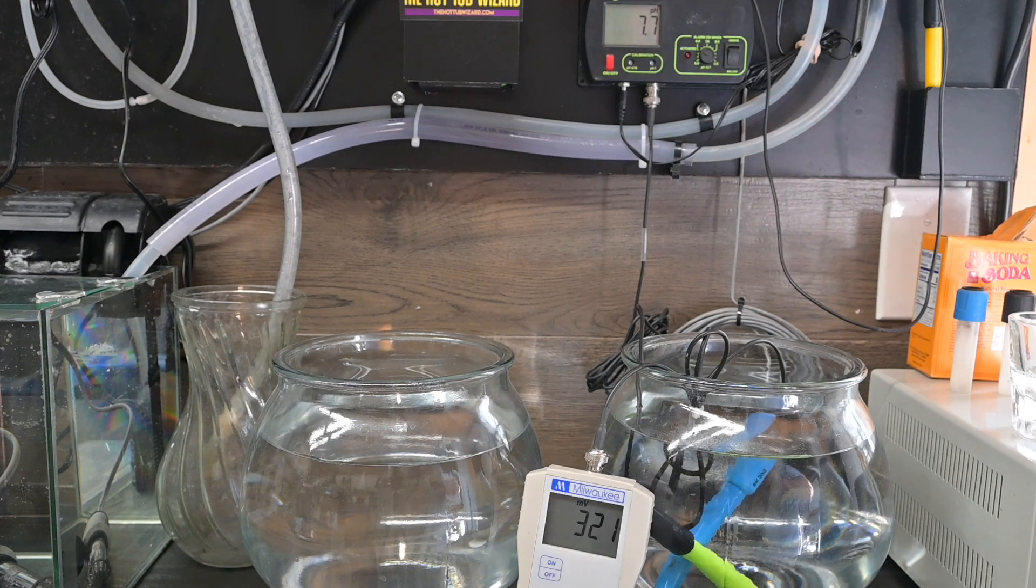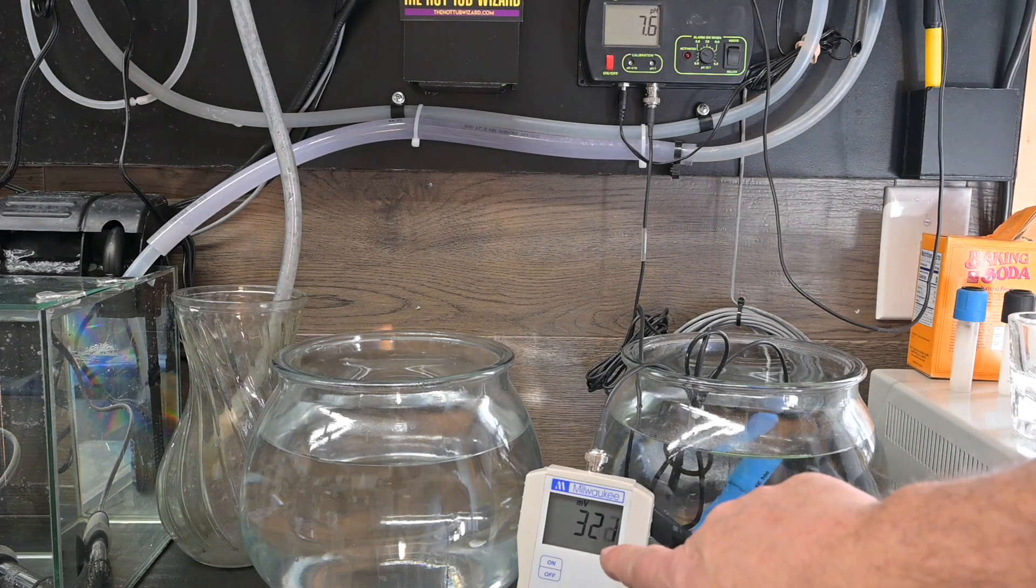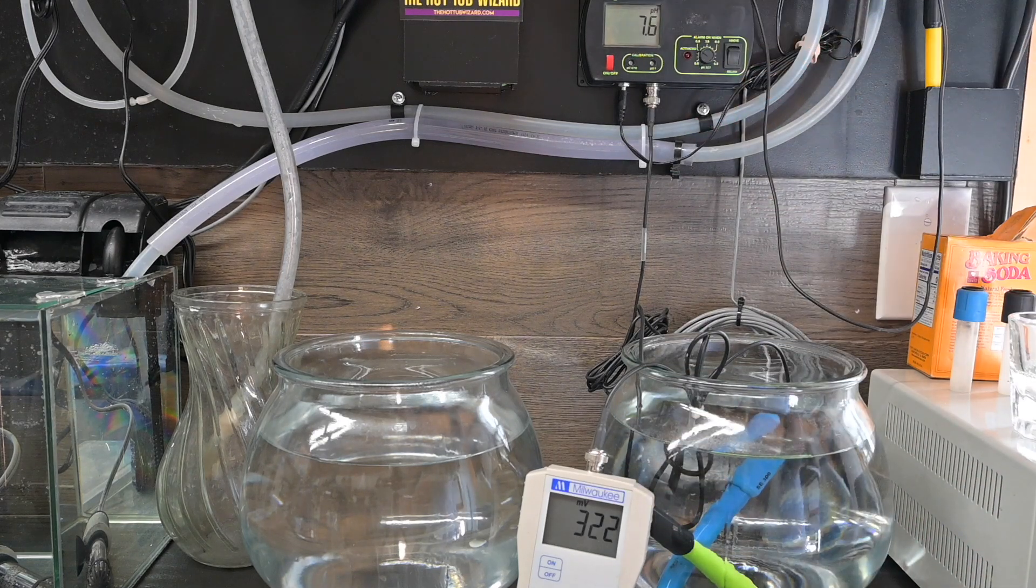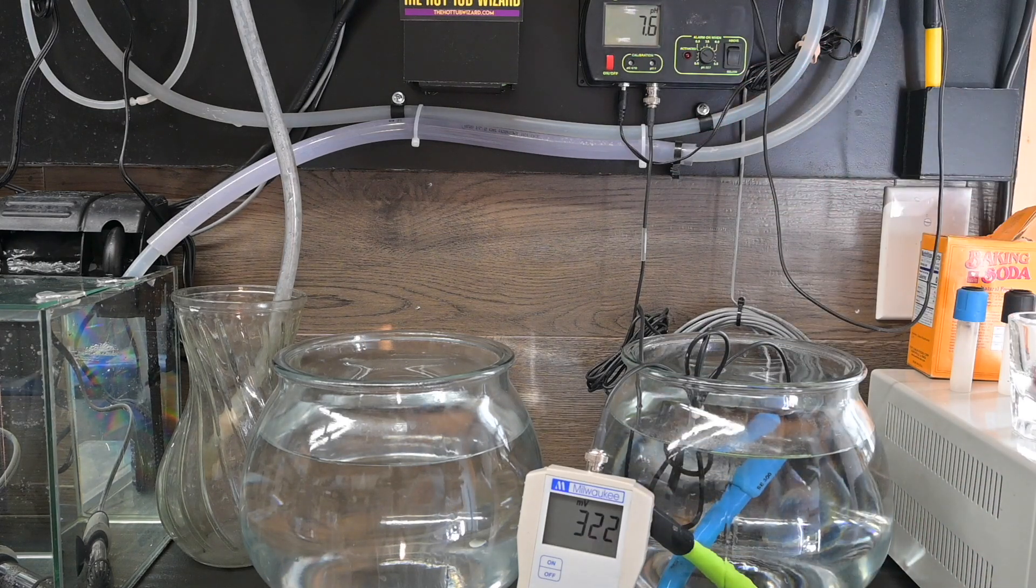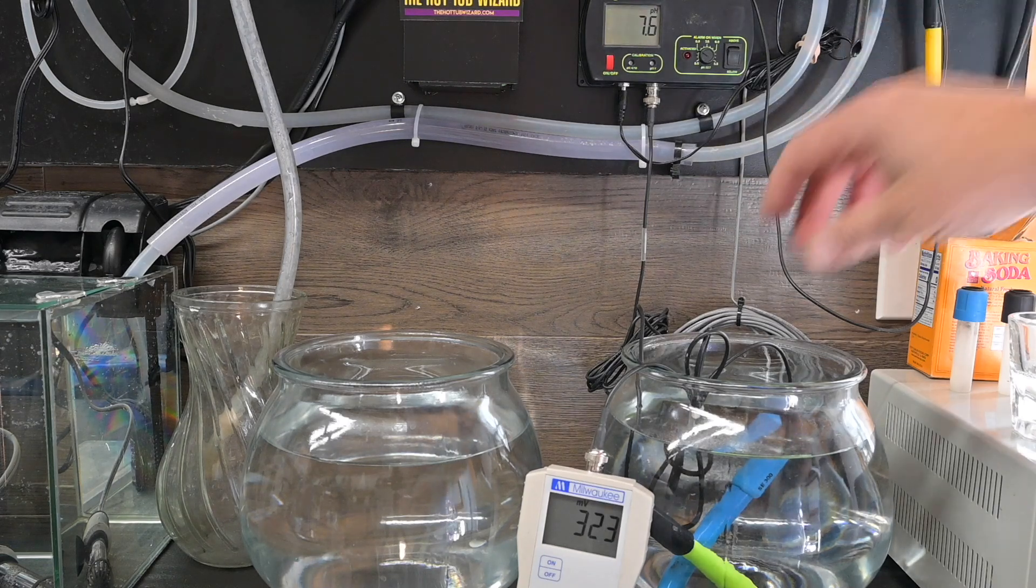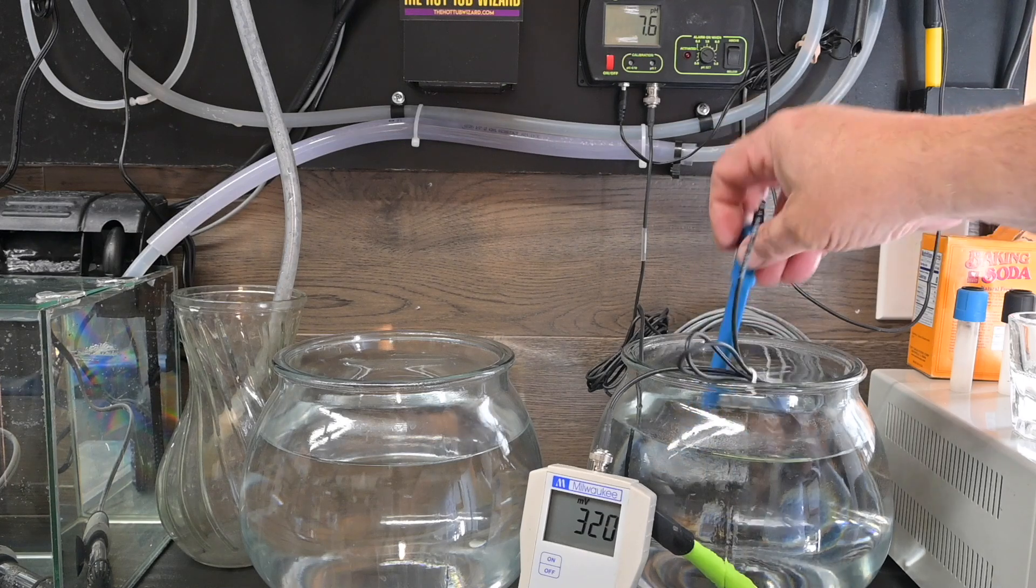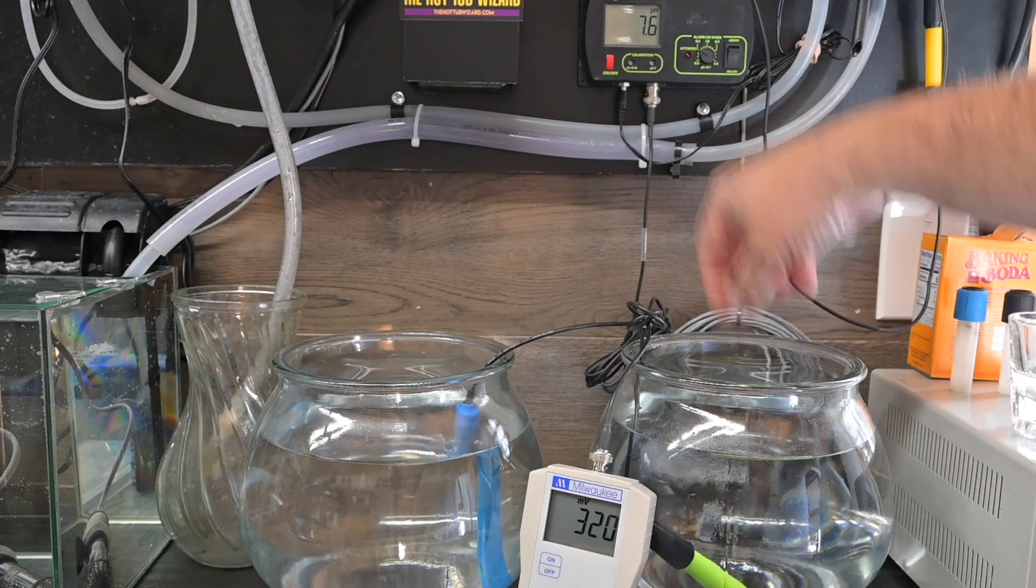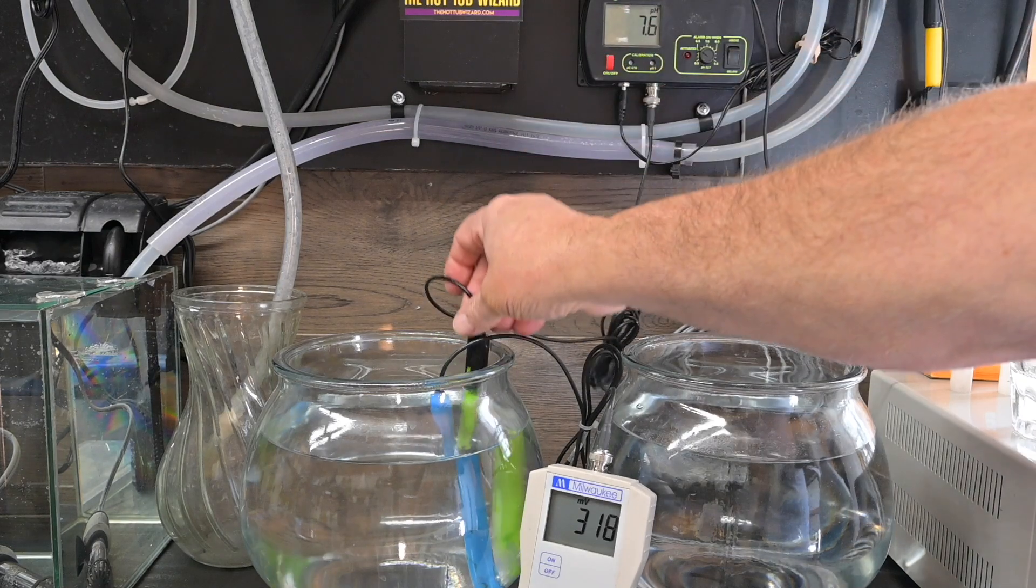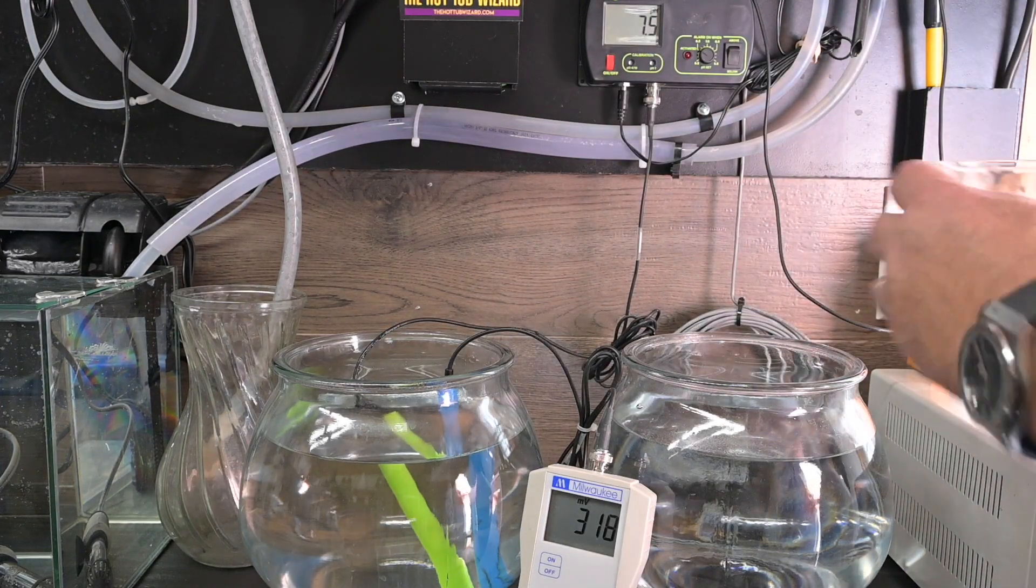Give it a few seconds here. We have 321 millivolts, 7.6 pH. So these two bowls of water are about as identical as we can possibly get.